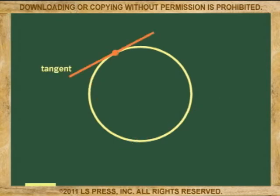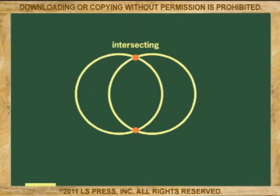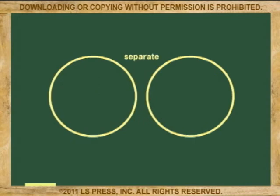Now, if we are referring to more than one circle, circles can be concentric if they share the same center, intersecting if they cross each other at two points, tangential if they touch at one point only, and separate if they don't touch.